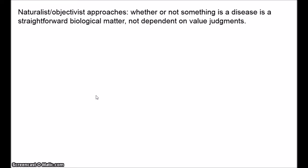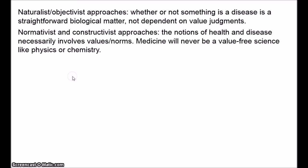Disease is a very straightforward biological state, just like death is. The second approach is normativist or constructivist. On this view, the notions of disease and health are based on value judgments — states that we value or disvalue. This approach denies that medicine can ever be a purely empirical science like physics or chemistry. Health and disease involve value judgments and may even be relative to different societies, so that a condition that counts as healthy in one society may count as diseased in another.